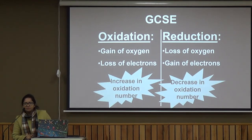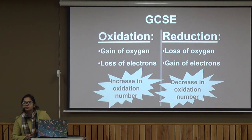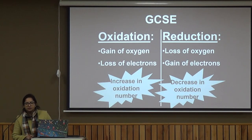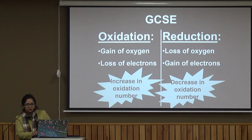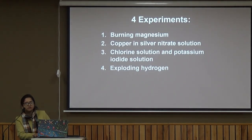Now, some experiments we can do to observe oxidation: when we burn magnesium, burning of magnesium is an oxidation reaction. Also, when you put a copper strip in silver nitrate solution, you can observe what happens. Additionally, if you add chlorine solution to potassium iodide solution, you can observe oxidation. These are experiments you can use to observe oxidation.